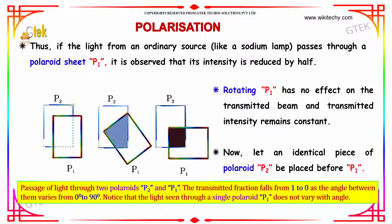Thus, if the light from an ordinary source like a sodium lamp passes through a polaroid sheet P1, it is observed that its intensity is reduced by half. Rotating P1 has no effect on the transmitted beam and transmitted intensity remains constant.